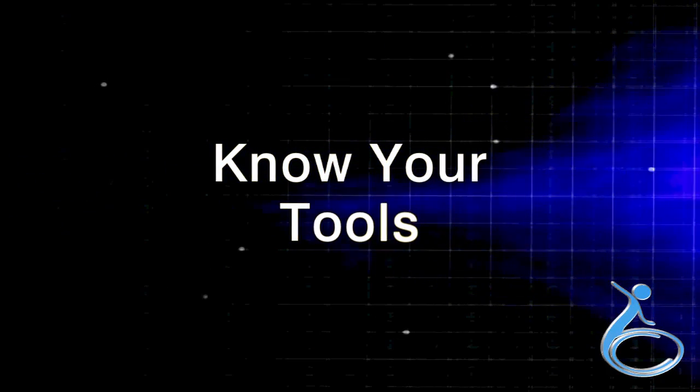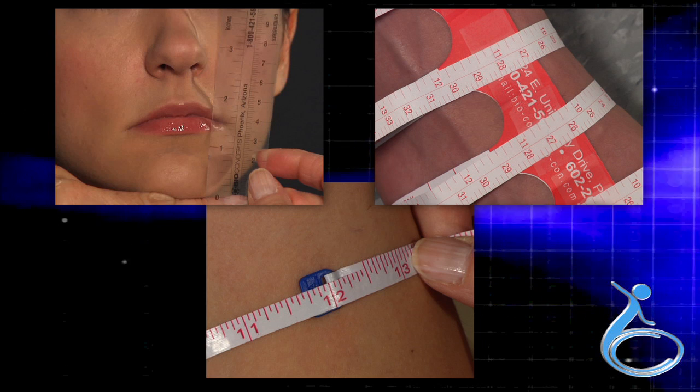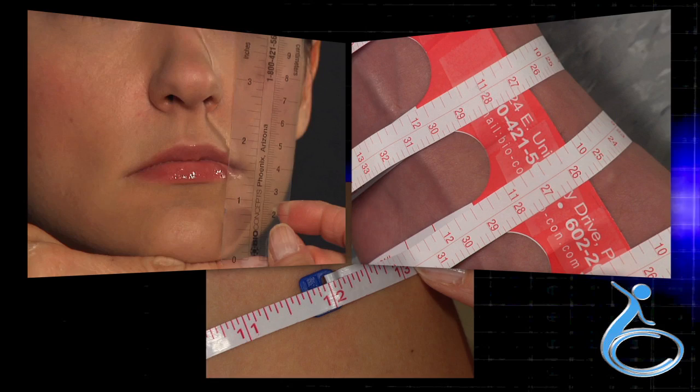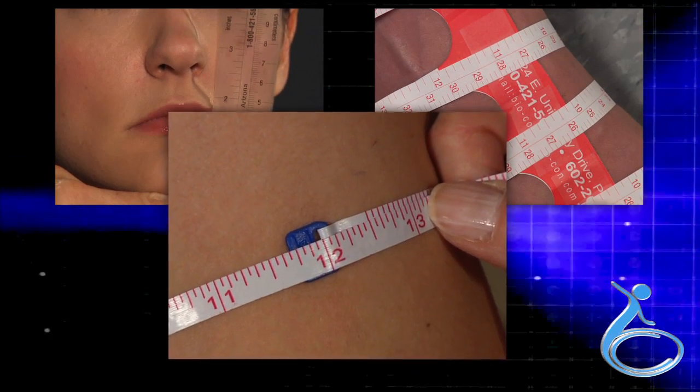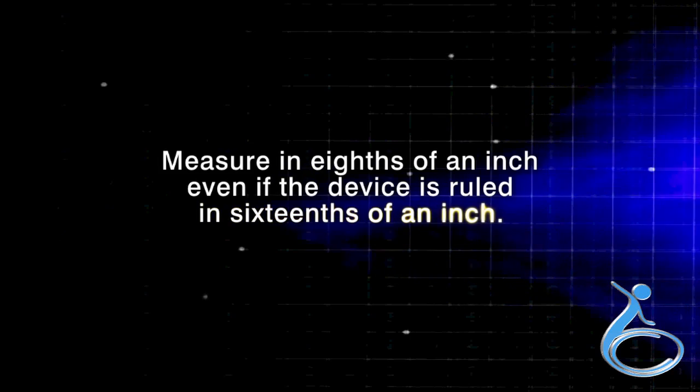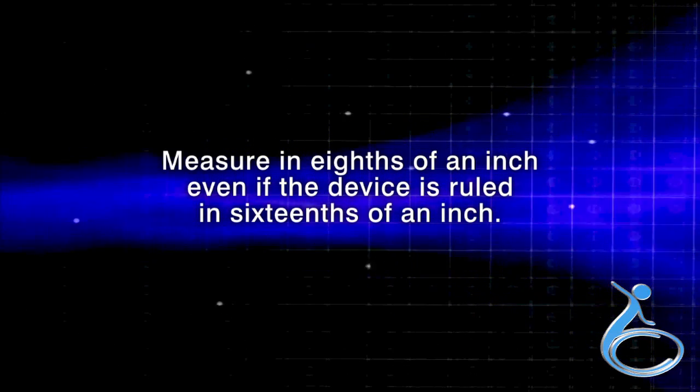Know your tools. Measuring devices using inches may be ruled differently. The paper tapes and the plastic ruler are ruled in eighths of an inch, while the retractable measuring tape is ruled in sixteenths of an inch. Measure in eighths of an inch even if the device is ruled in sixteenths of an inch.